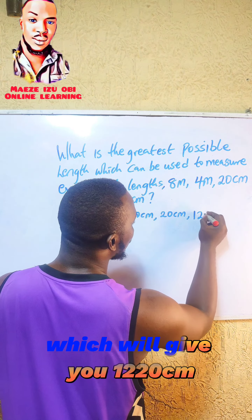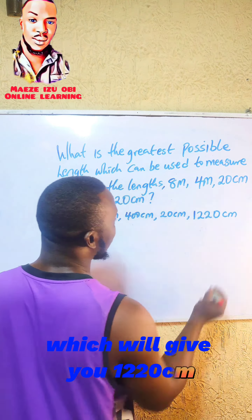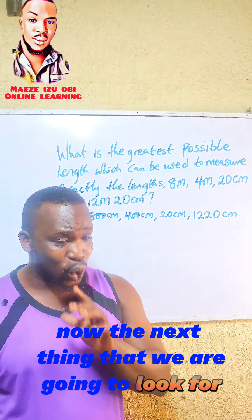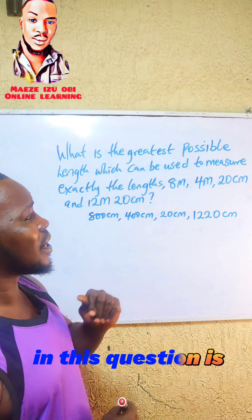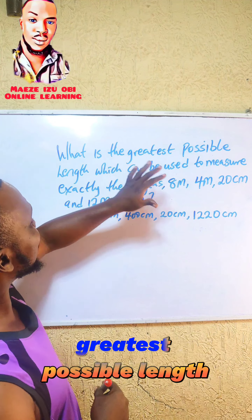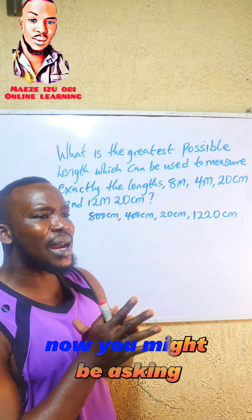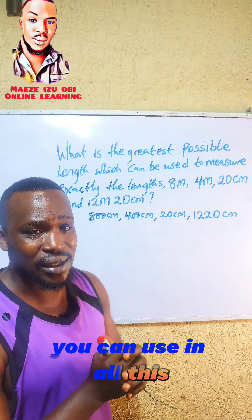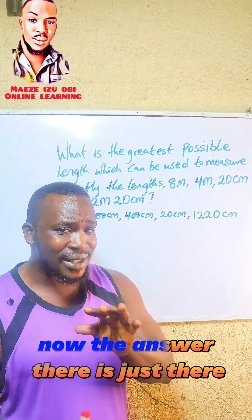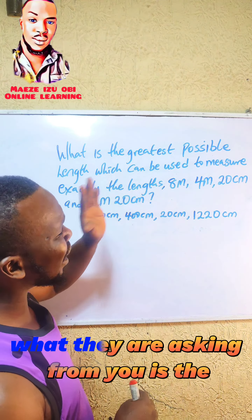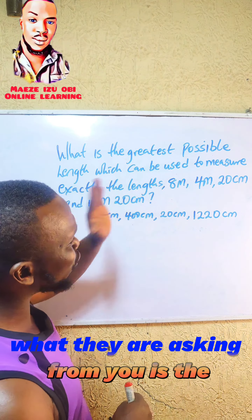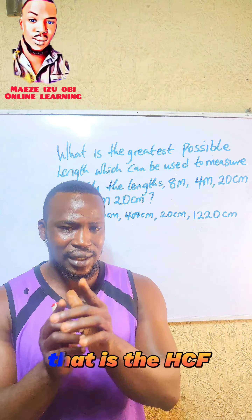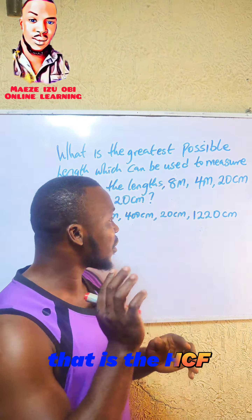The next thing we are looking for is the greatest possible length. What they are asking from you is the highest common factor — that is, the HCF.